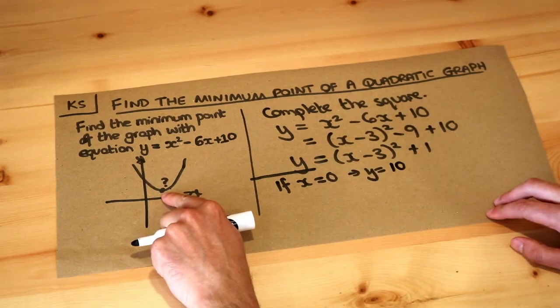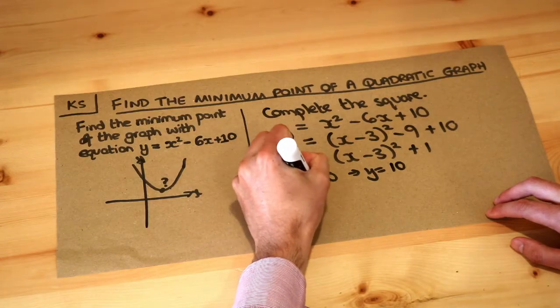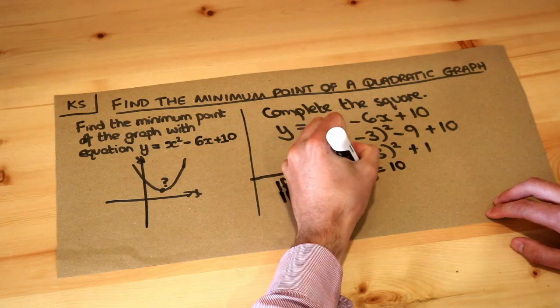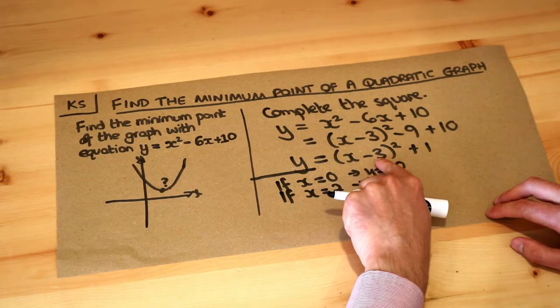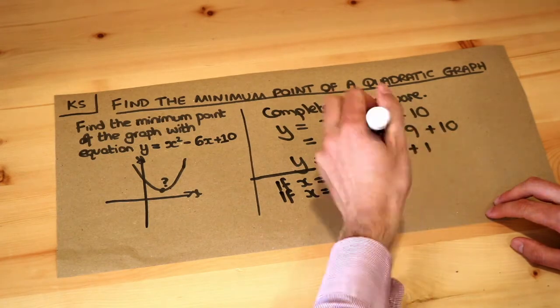Now can we get a smaller value of y than that? Well yes we can. If we made x is 2, then y would be - well, 2 minus 3 is minus 1, minus 1 squared is 1 plus 1 is 2.